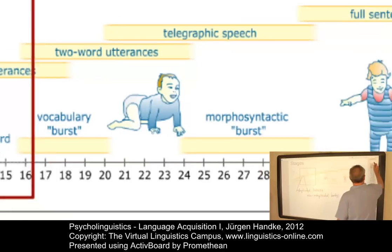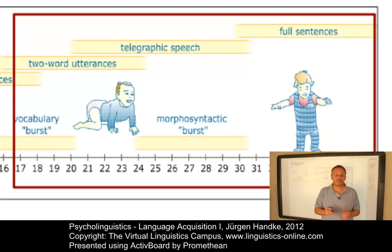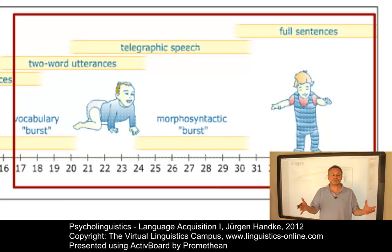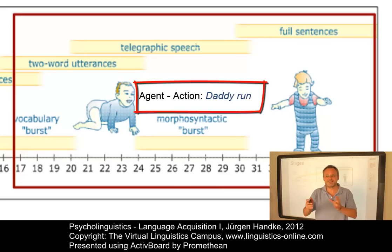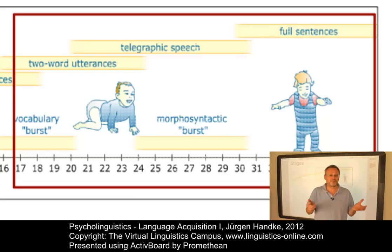At the same time, these new words are combined into more complex constructions and the child gradually uses sentence-like structures — first in terms of two-word utterances, where two words are combined expressing various semantic relationships such as agent-action in cases like 'daddy run.' And then again a burst — a morphosyntactic burst — where we can discover an enormous increase of inflectional and functional elements.